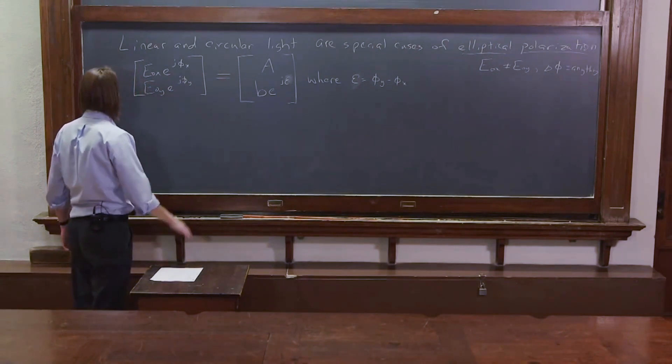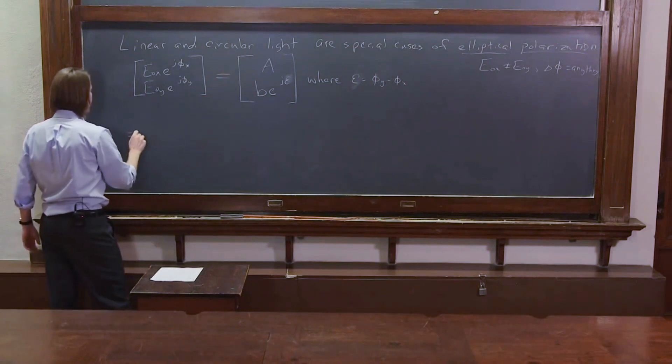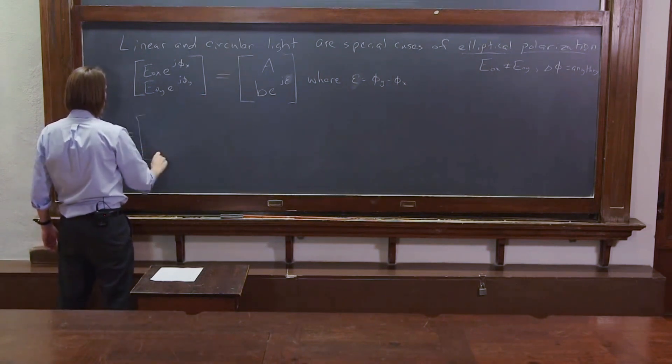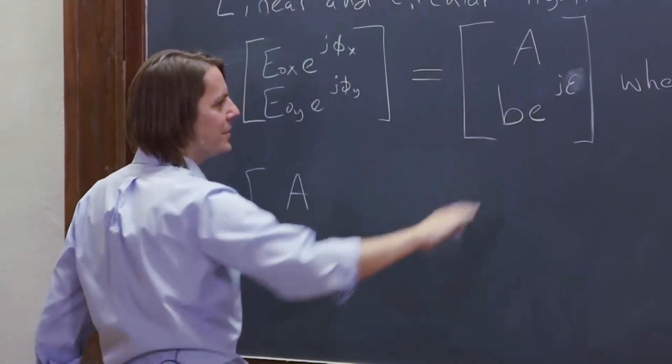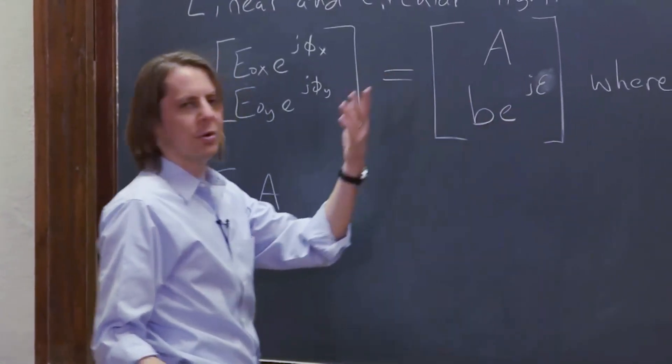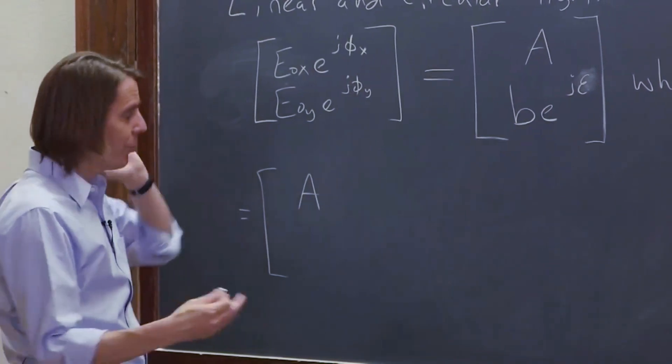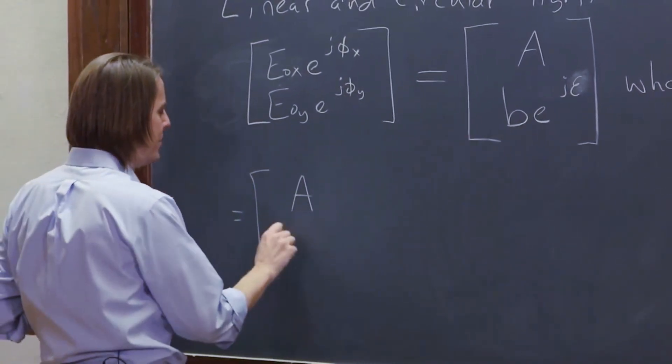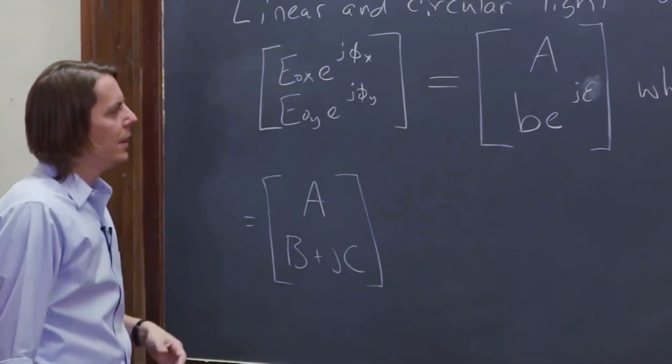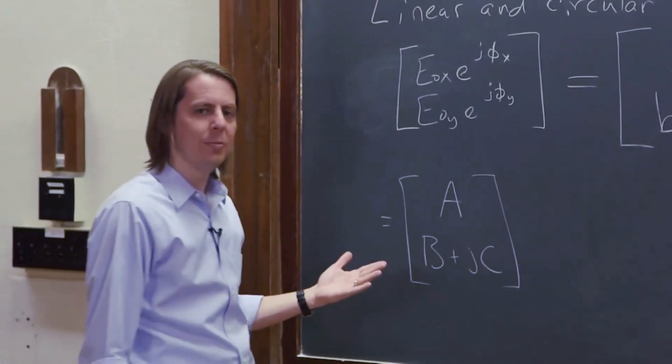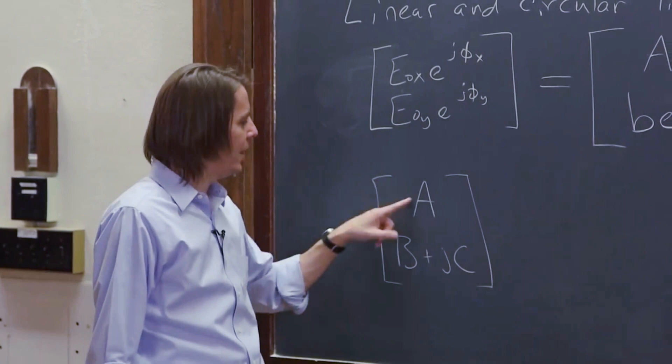But there's one more thing you can do to simplify it. If you can write it like that you can write it like this. If this is a real number it's just a real number A. And if this is a complex number well you can use Euler's theorem to convert that to the more of the complex form we like, B plus J times C. And then you can describe this elliptical polarization with three numbers: A, B, and C.